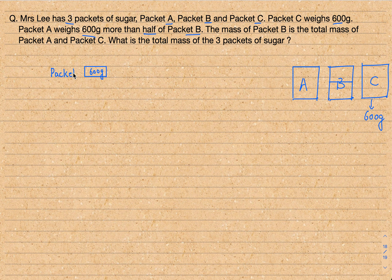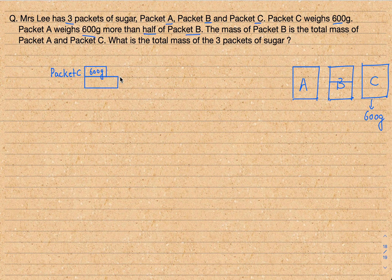So let's say this is my packet C, which is 600 grams. Now how about packet B? Since we know that we have to find half of packet B, it would be better if we assume that this whole thing is two units. So let's say our packet B is two units — please don't make this block the same size as packet C, because one unit is not 600 grams. So this is one unit and this is another one unit, representing my packet B.